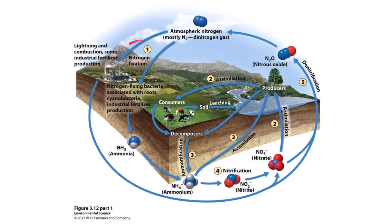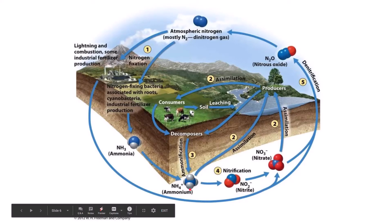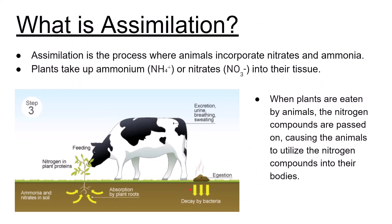Looking at the diagram: you can see fixation shown here — lightning and the industrial Haber process on one side producing nitrate from atmospheric N2, and on the other side, biotic bacterial processes taking N2 and converting it first to ammonia and then to ammonium. The cycle then continues from there.